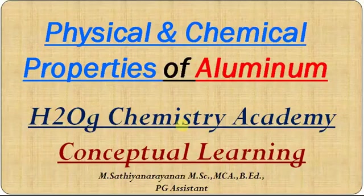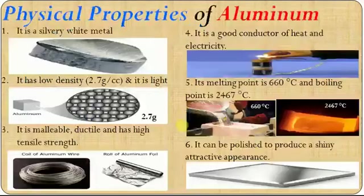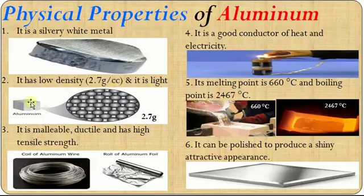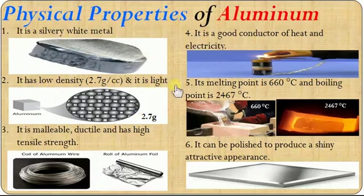Let us see the physical properties of Aluminium. First, it is a silvery white metal — it looks like silver in color. It has a low density of 2.7 grams per cubic centimeter, and it's very light in weight. If you take a cube of 1 cm height, 1 cm width, and 1 cm length, the Aluminium will have a weight of just 2.7 grams.